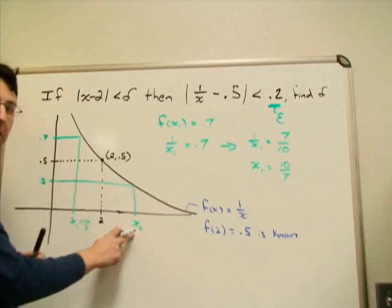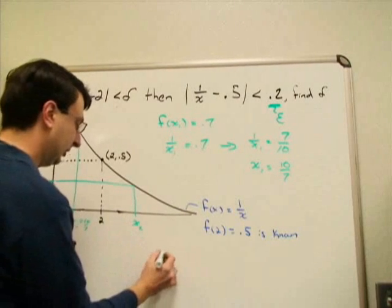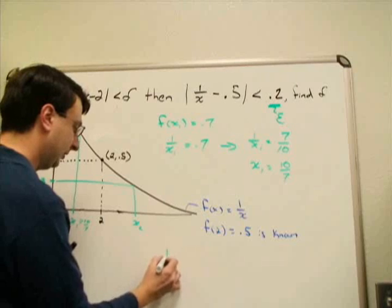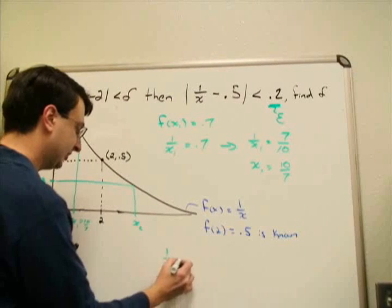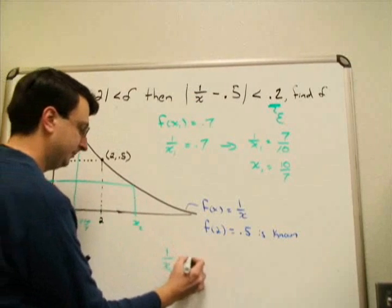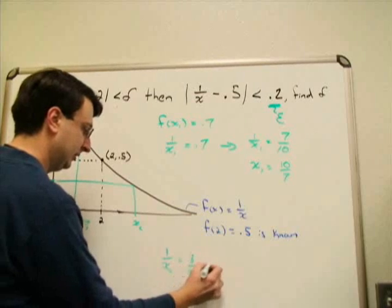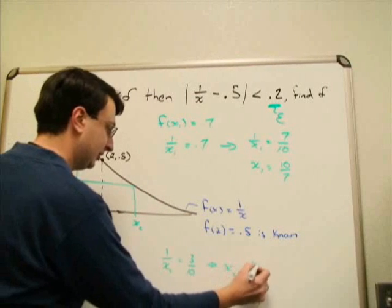By a similar argument we can find what x2 is. We're looking for x2: it's 1/x2 equals 0.3, which is 3 tenths, which tells me x2 is going to be 10/3.